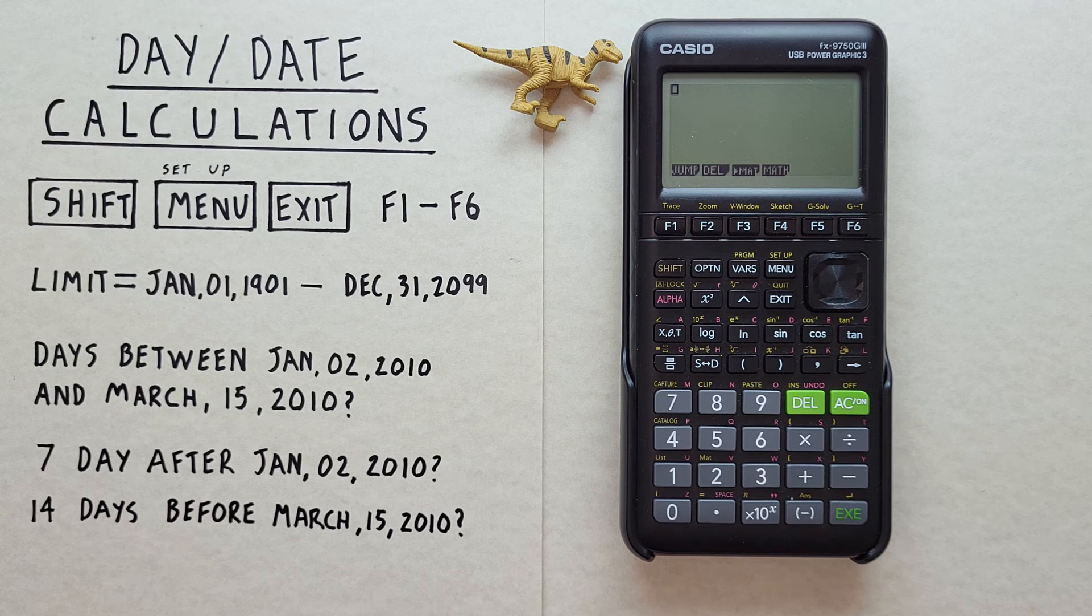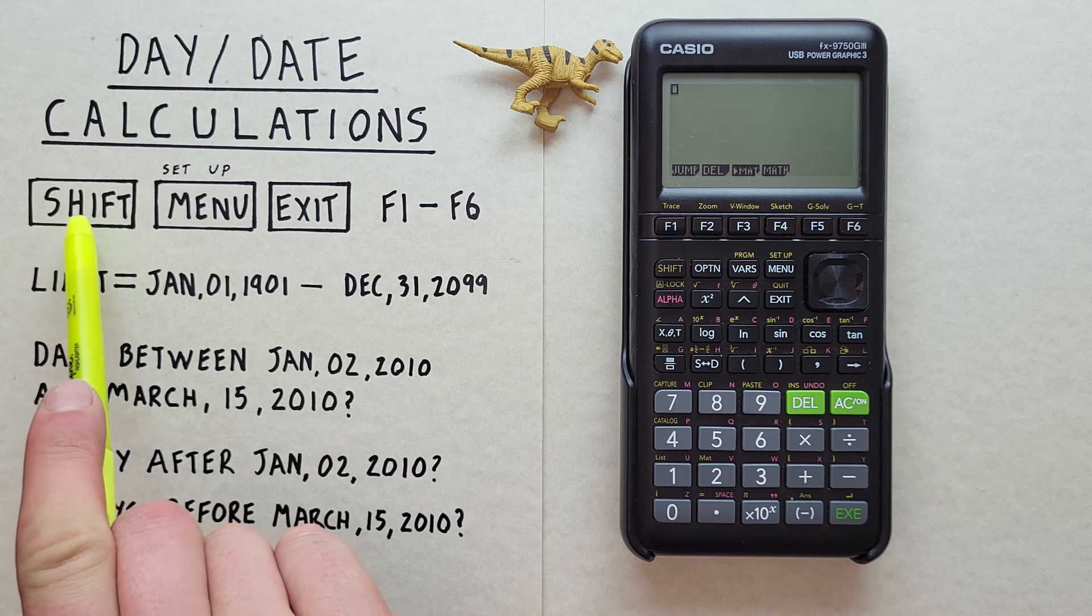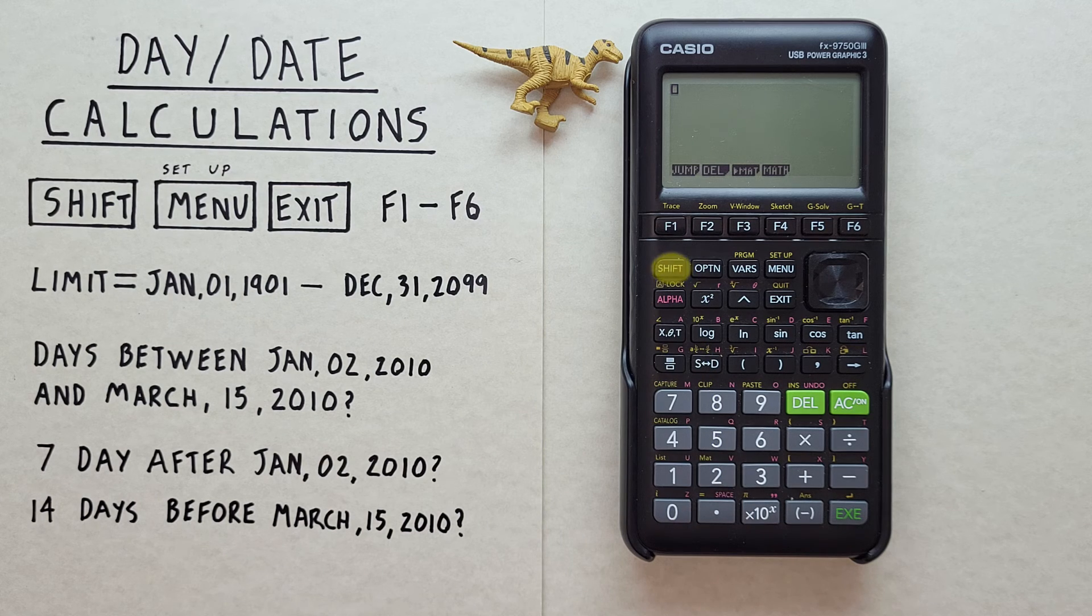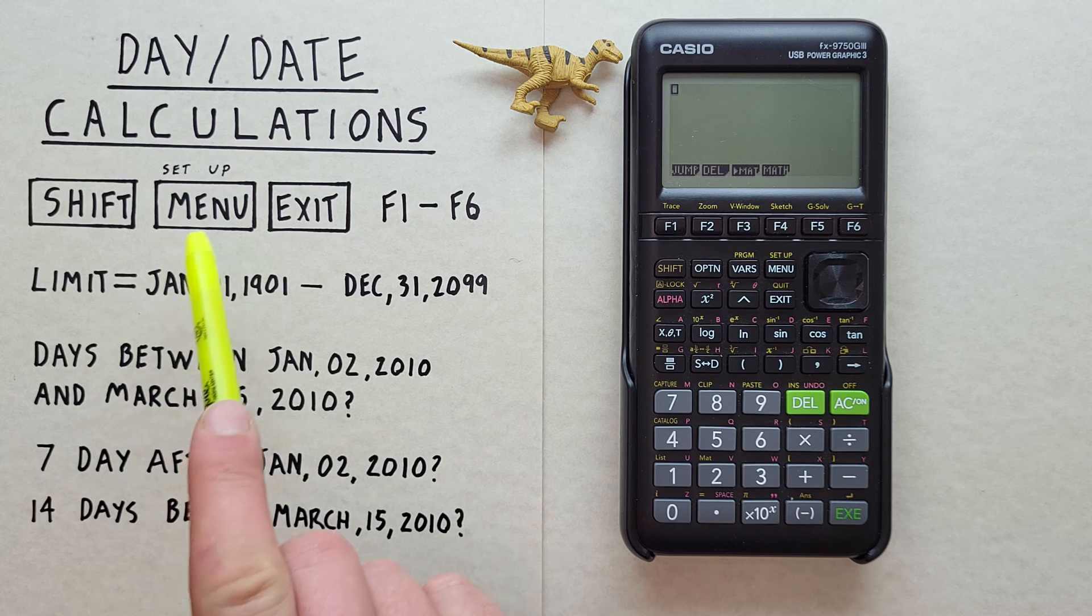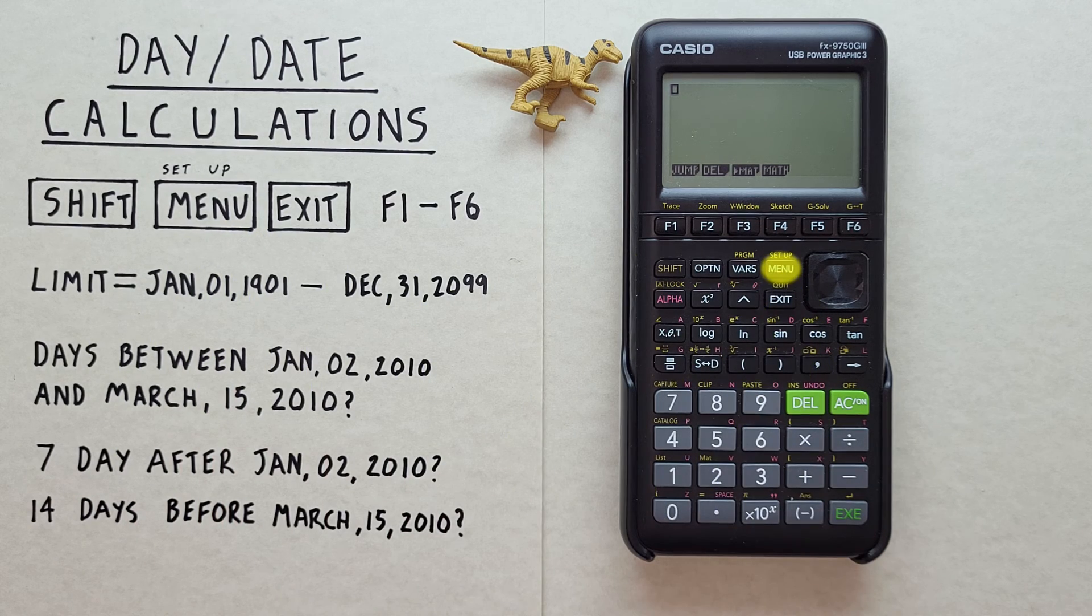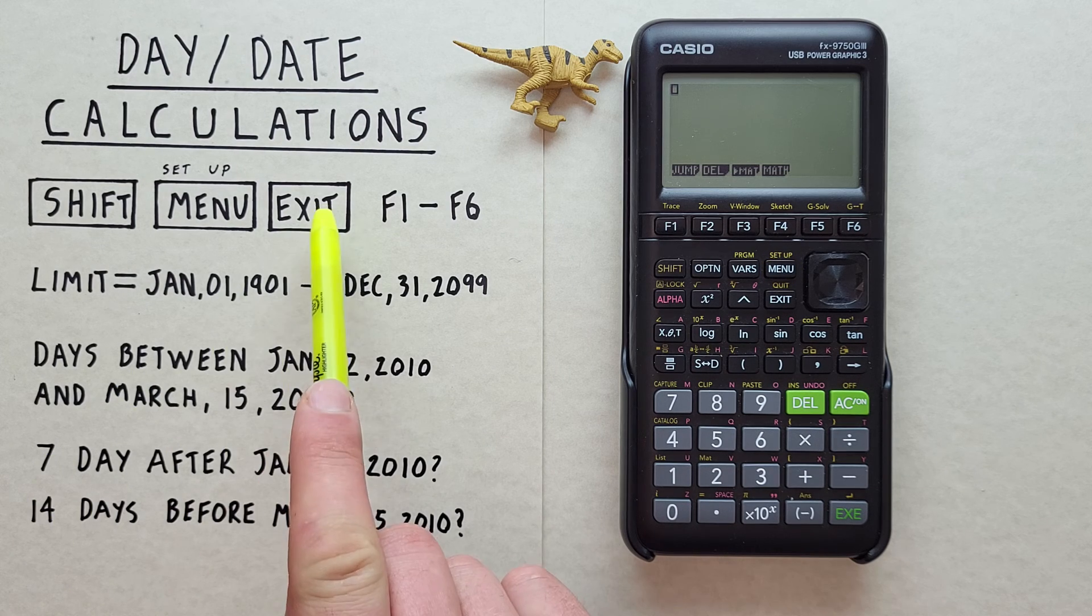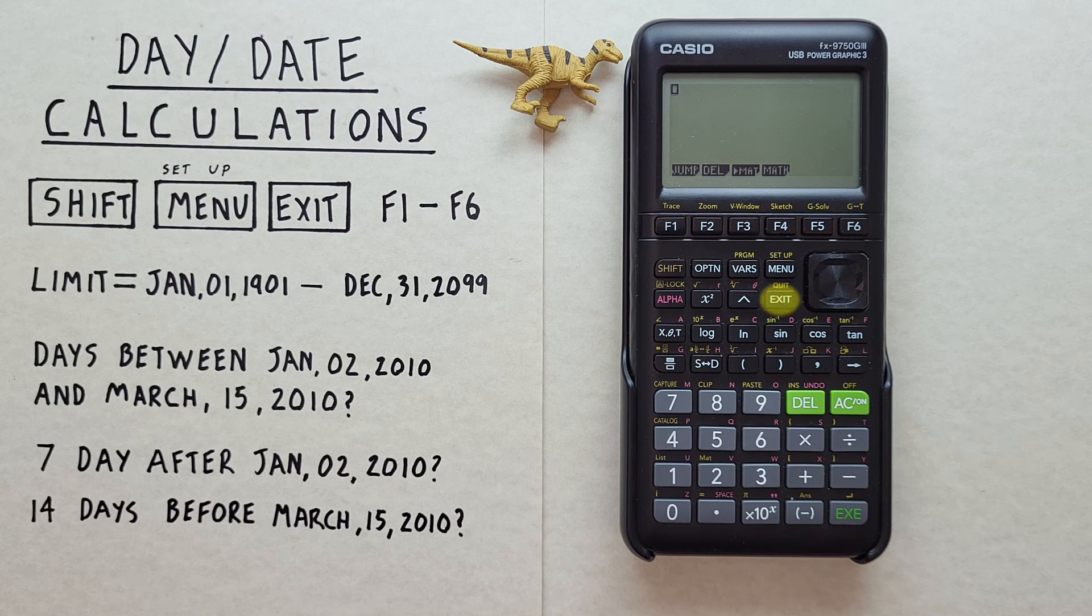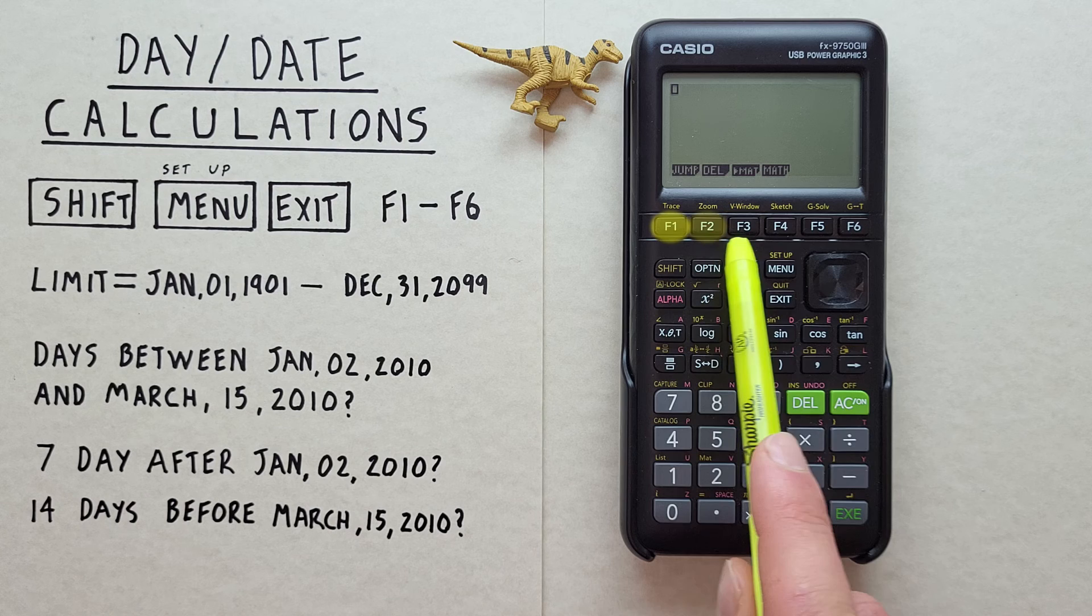To do that we'll need to use the shift key that looks like this located here. The menu key with the shift function of setup that looks like this located here. The exit key that looks like this located here. And the F1 through F6 keys located across the top here.